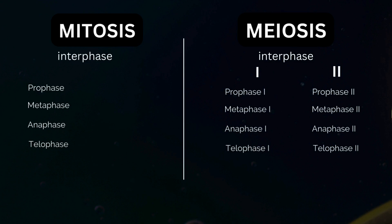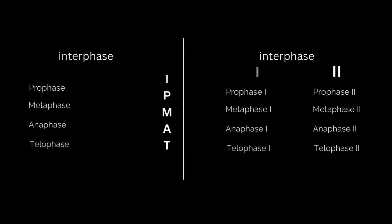The easiest way to remember these phase names is to remember IPMAT: Interphase, Prophase, Metaphase, Anaphase, and Telophase. So let's look at meiosis in more detail.